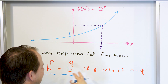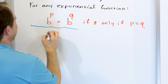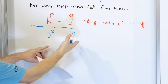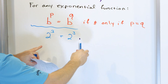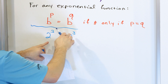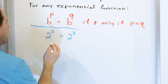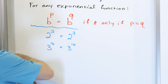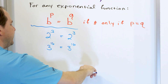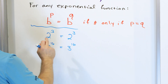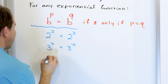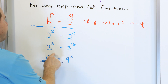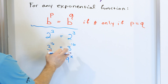To illustrate with some examples: two to the power of three equals two to the power of three — of course they're equal, they're the same thing. What this is saying is that when you have two exponential functions with the same base, the only way the points on the curves can be equal is if the exponents are also equal. Similarly, nine to the power of x equals nine to the power of x only because the exponents are equal.